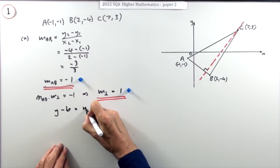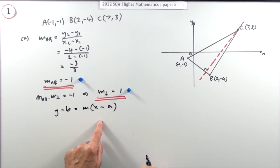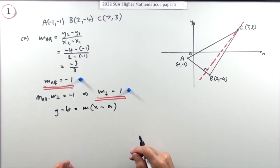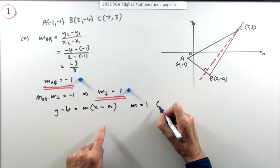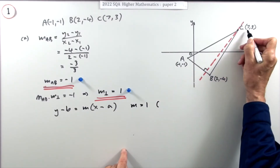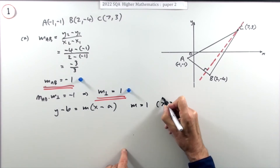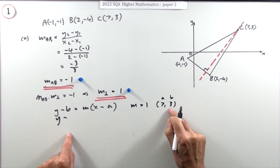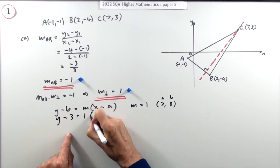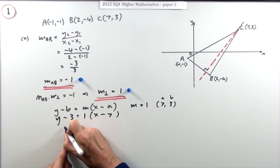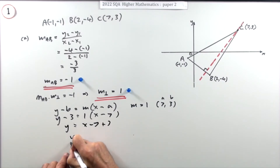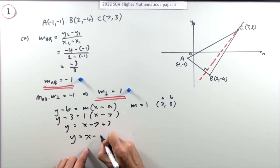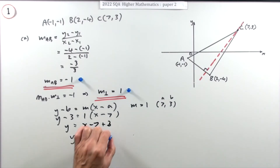Now put it all together using y − b = m(x − a). The gradient m is 1 and the point on the line is C, which is (7, 3). So: y − 3 = 1(x − 7), which simplifies to y = x − 4. That gets the last mark for part a.